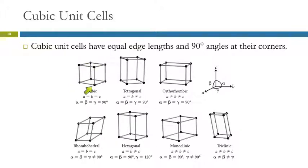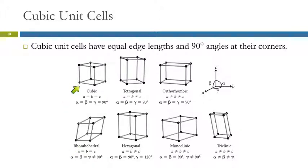We're going to look at cubic unit cells. In a cube, the length, width, and height are all the same, and the angles are all 90 degrees. You can have a rhombohedral, which is like a cube but twisted — the angles aren't 90 degrees, but the sides are the same length. Or you can have tetragonal, where all the angles are 90 degrees but the sides are not the same length.